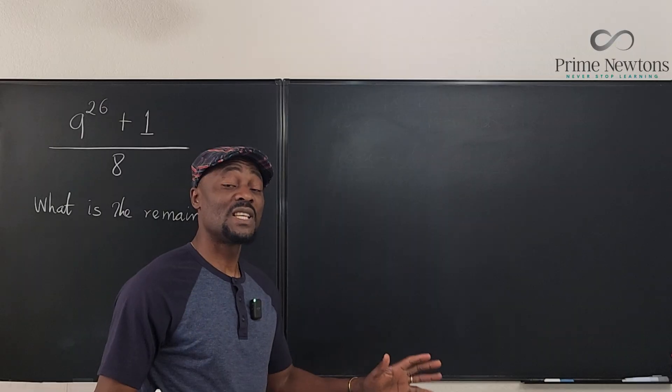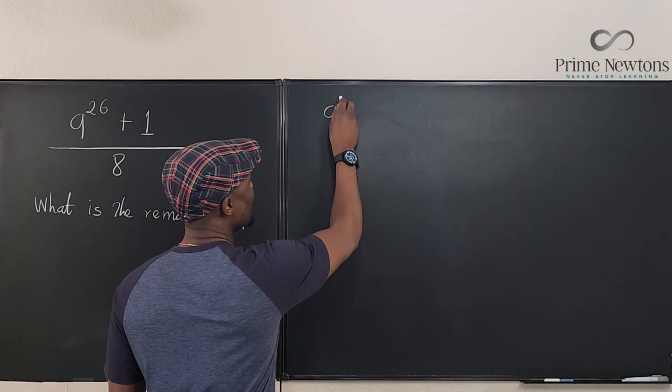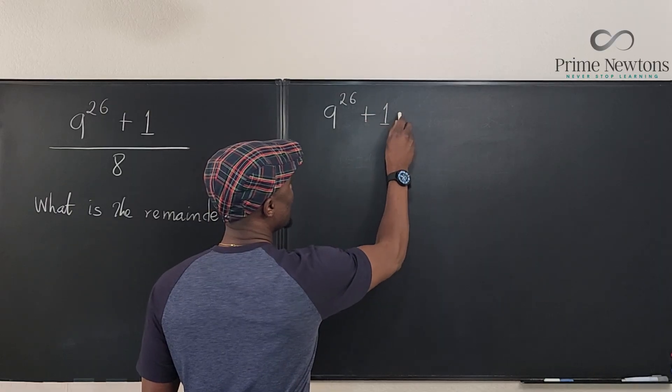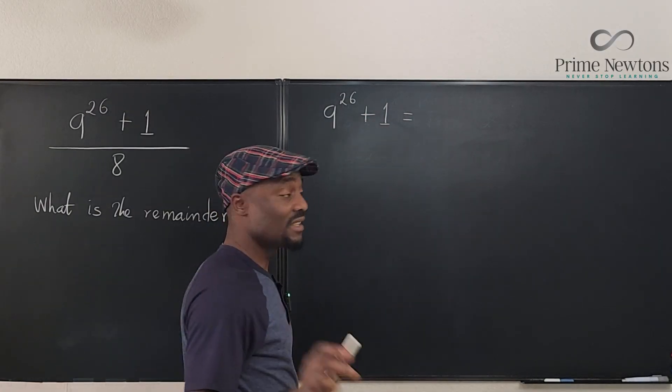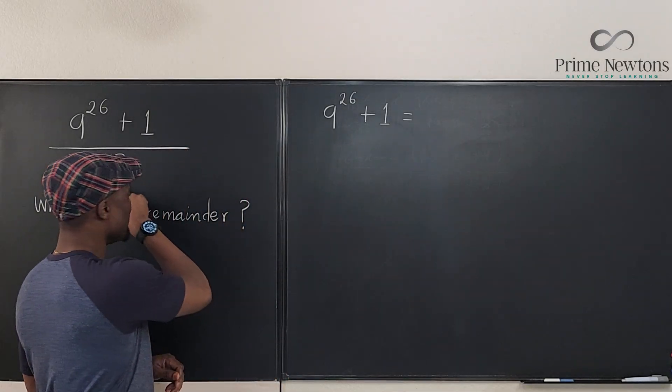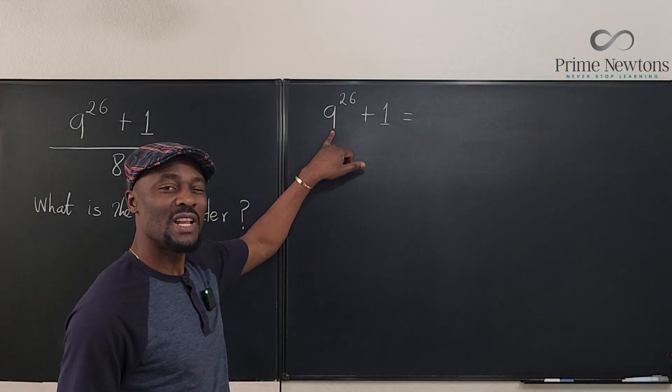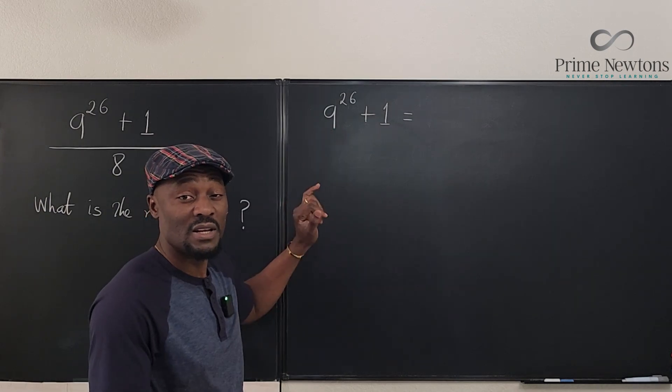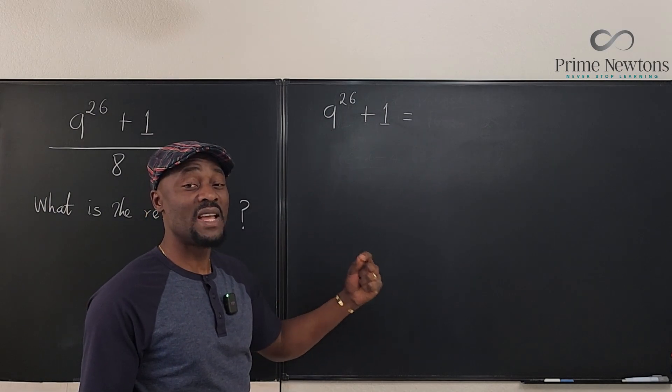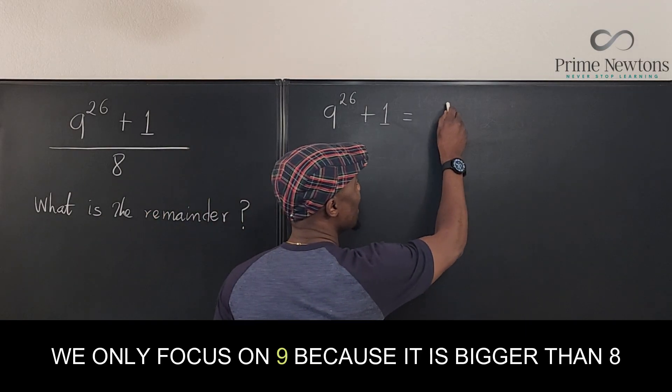So this is how you answer this question. You're going to say that 9 raised to power 26 plus 1 is the same thing as if you divide 9 by 8. Since you want to divide this by 8, you're going to express it mod 8. You're going to write this, so 9 is the same thing as 1 mod 8.